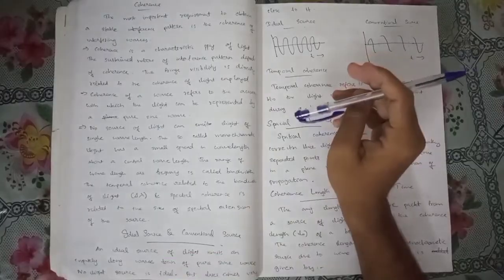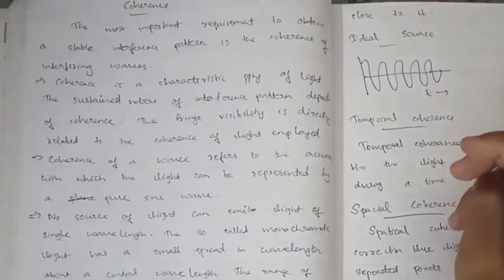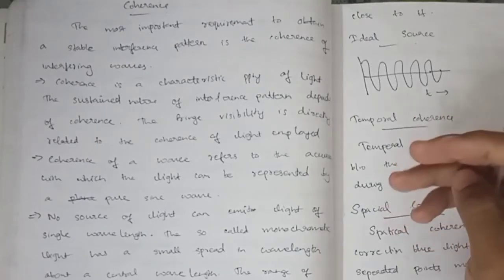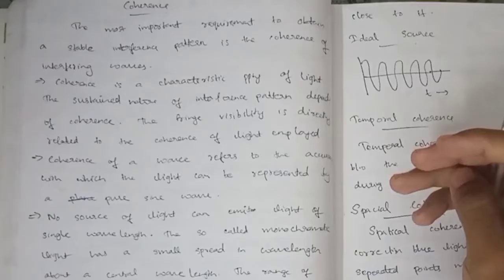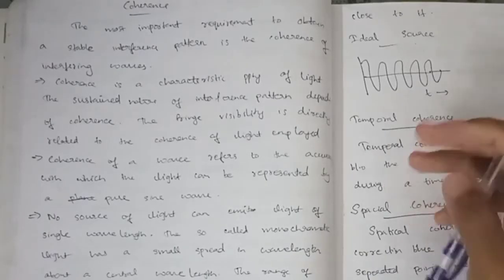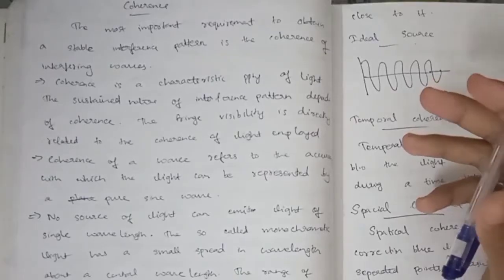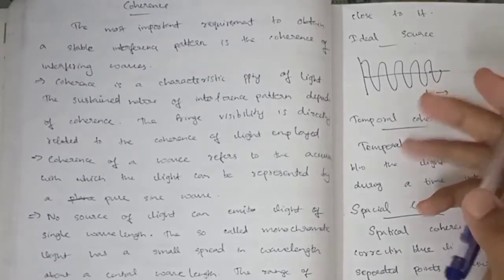We are going to show you what is coherence and what are interfering waves. What is coherence? Same wavelength, same amplitude, same constant phase relationship.